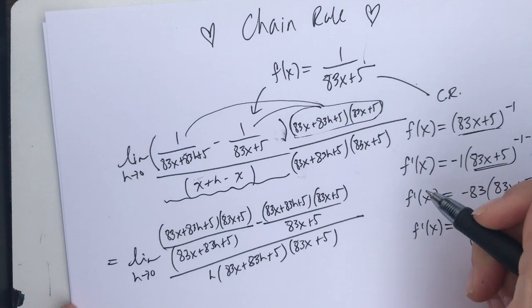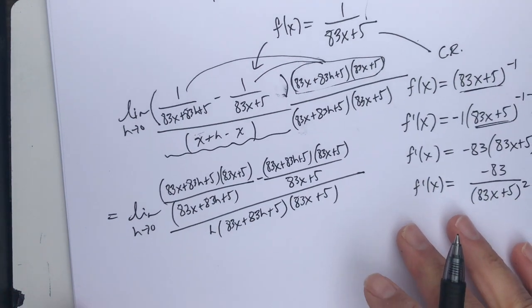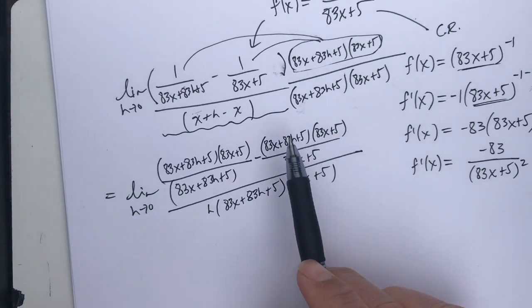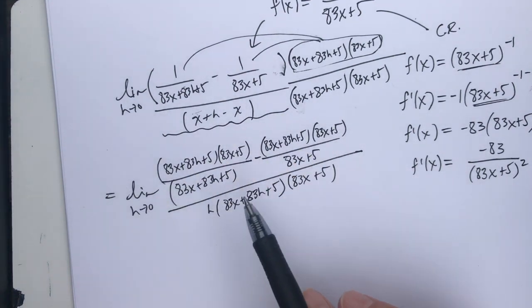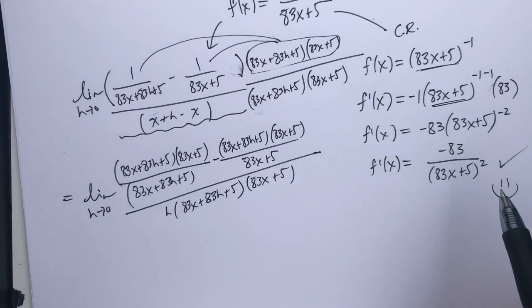So lots of algebra, it's gross and nasty. And again, if you can just kind of follow along, you're not going to be responsible for doing this. But I want to show you, after simplifying all this nasty algebra and taking the limit, I'm going to end up with this derivative, and I'm going to be very happy.